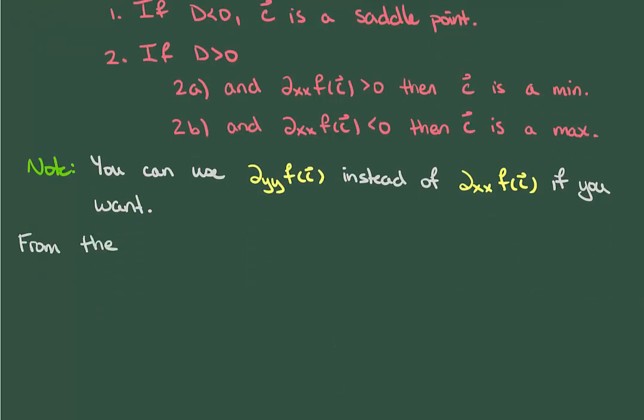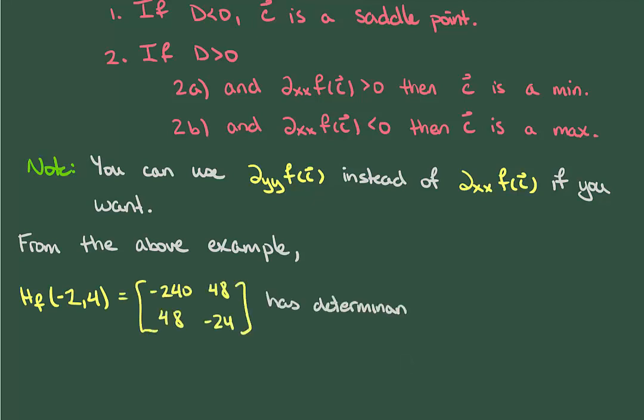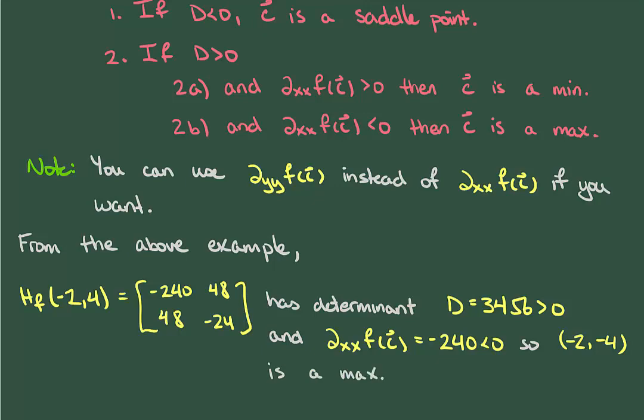So, to avoid computing eigenvalues in the example above, we're going to compute determinants instead. The Hessian at (-2,-4) has a negative determinant. Thus, we look at the xx derivative in the top left corner and see that it's negative, meaning that (-2,-4) is a local maximum.